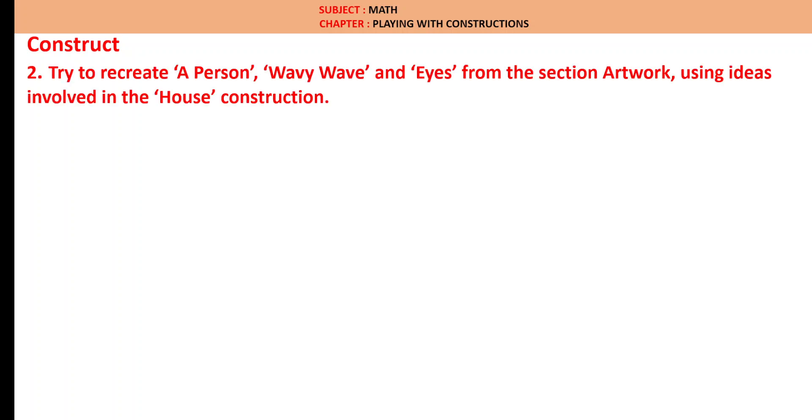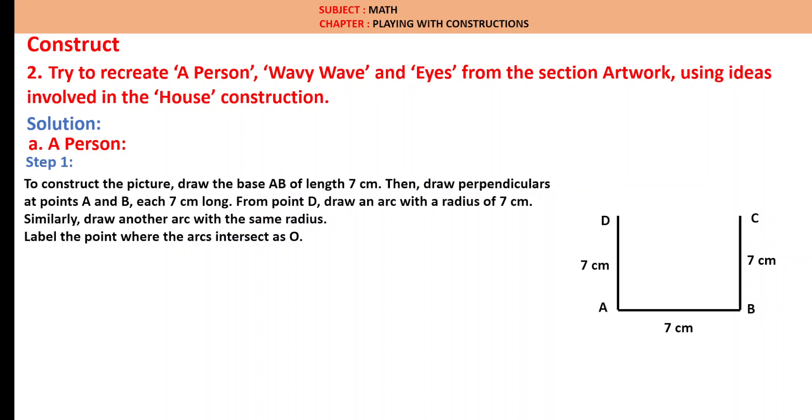Construct: Try to recreate a person's wavy wave and eyes from the section artwork using ideas involved in the house construction. Solution: A person. To construct a picture, draw a base AB of length 7 cm, then draw a perpendicular at points A and B, each 7 cm long. From point D, draw an arc of radius 7 cm. From C also draw an arc of 7 cm. Let us notate the intersecting point as O. We are drawing this point to draw the head which is in circular shape.